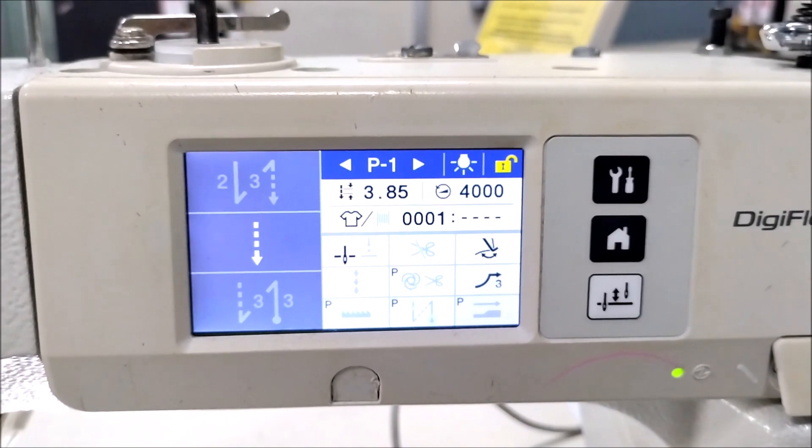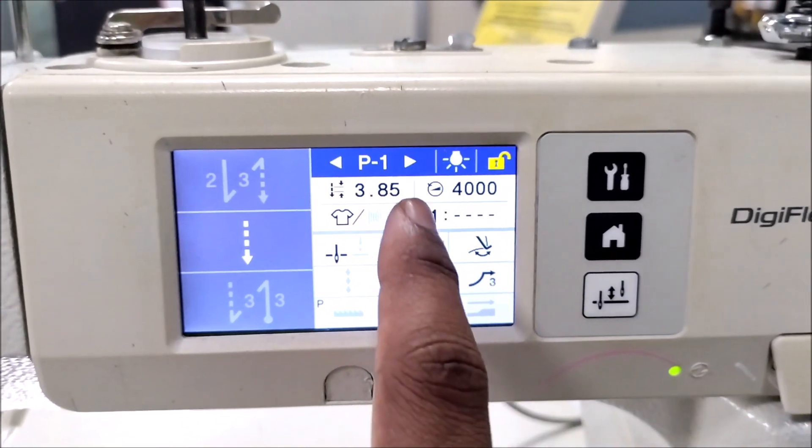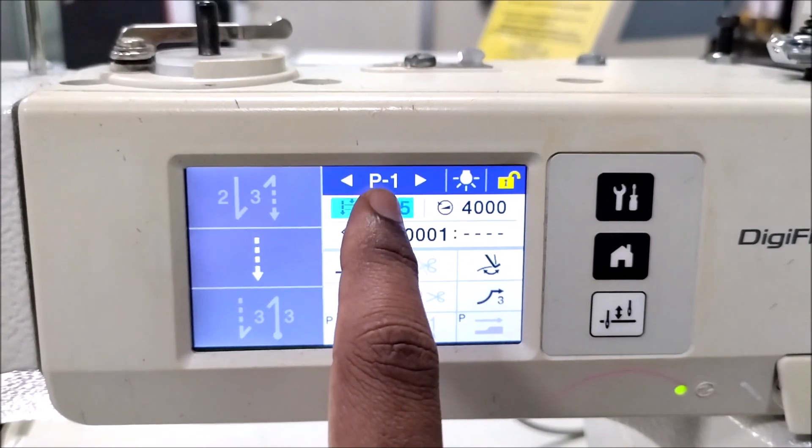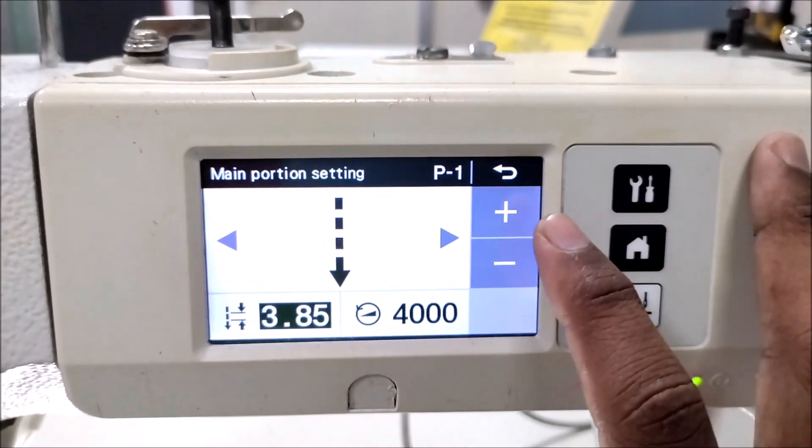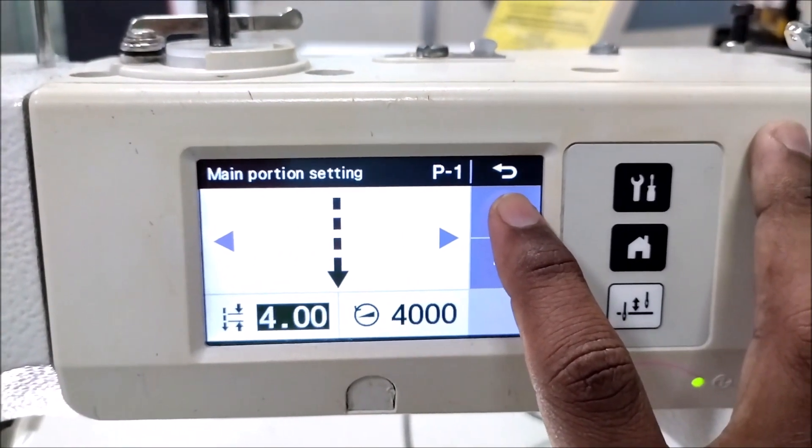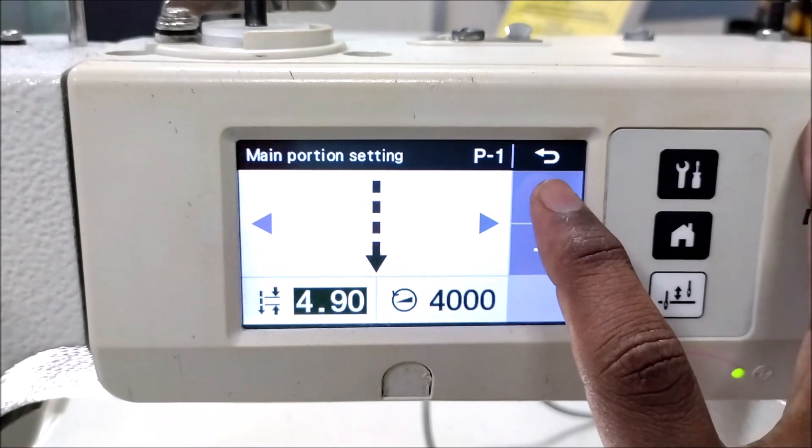Then to check the feed dog forward-backward position, we can switch on the machine and go to the setting to change the stitch length and have to get the maximum amount of stitch length 5 mm.